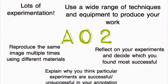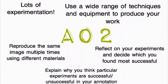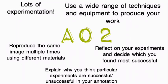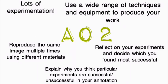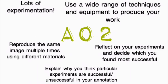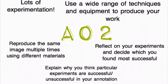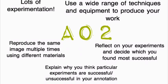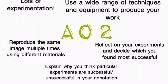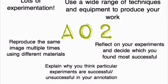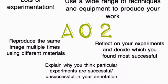The theme of A02 is all about experimentation — use as many different techniques as you can possibly think of. The more you experiment, the more marks you will pick up. An example of how to do this is to reproduce the same image multiple times using different materials, so you could create an image using pencil, then create it again with oil pastels, then fine liner, etc. This then allows you to compare which materials are more successful.